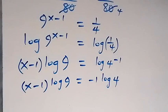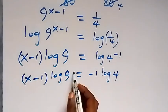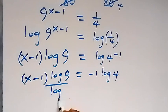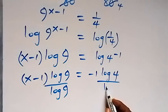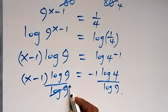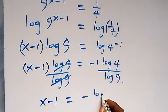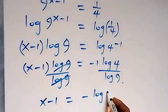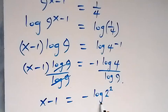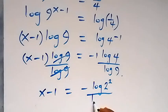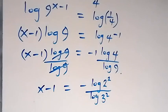And here, we can also divide through by log 9, so as to remove log 9. Divide both sides by log 9, so that log 9 cancels out. Then we have x minus 1 equals minus log 4 over log 9. We can write 4 as 2 squared, and log 9 can be written as log 3 squared.